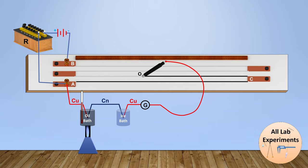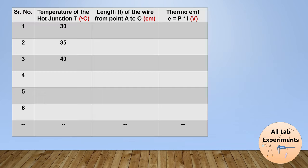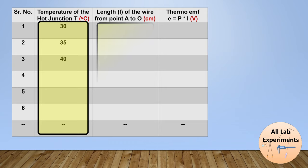Similarly, we will increase the temperature and note down the reading of the stable point. Finally, we will make a table of it. In this table, in one column we will write down the temperature, and in another column we are going to write the length of the wire from point A to O.